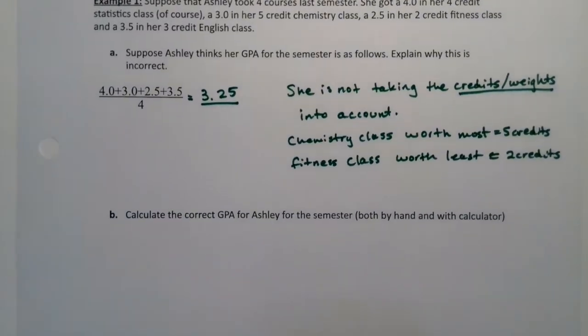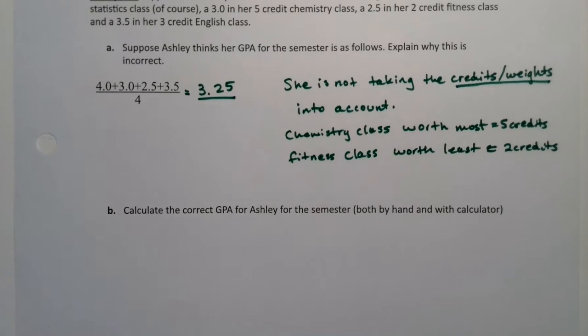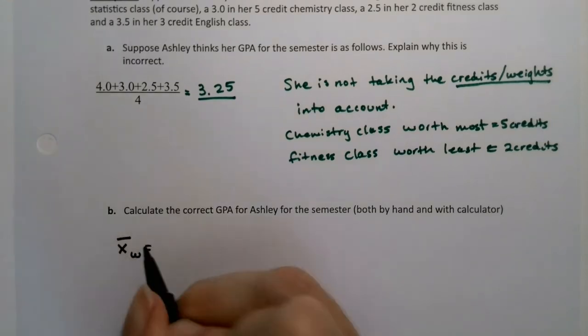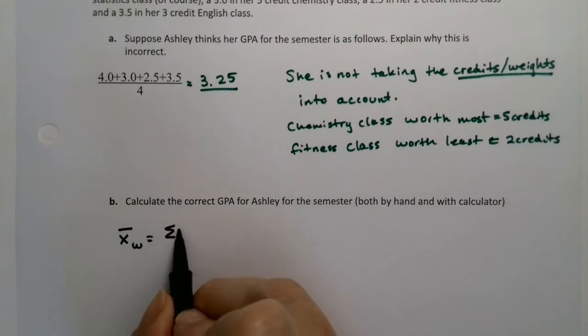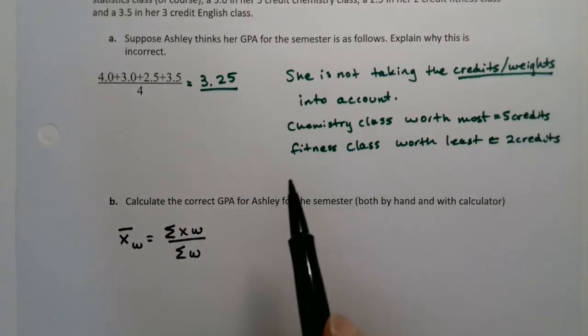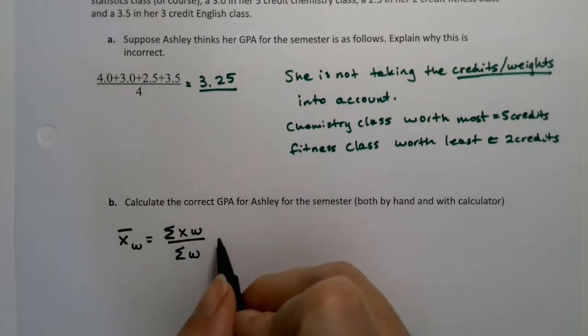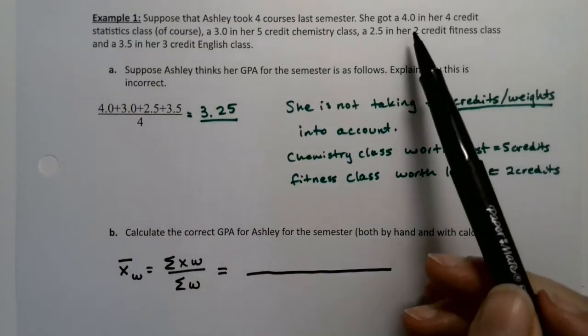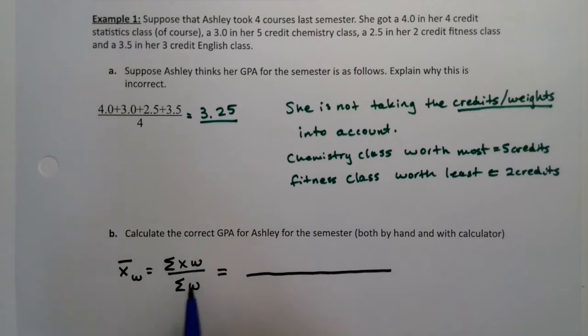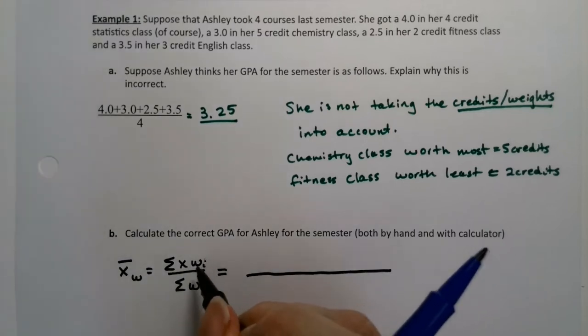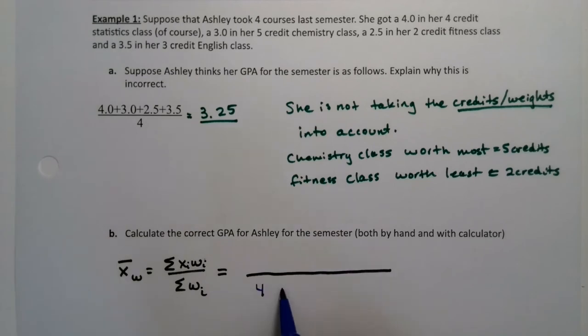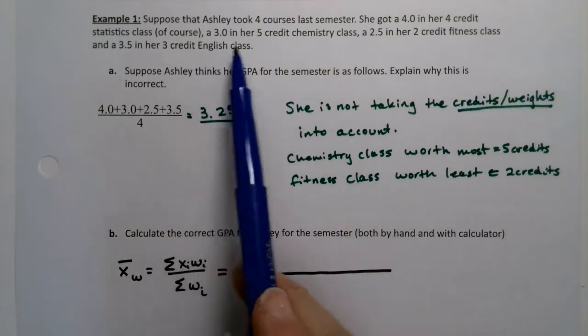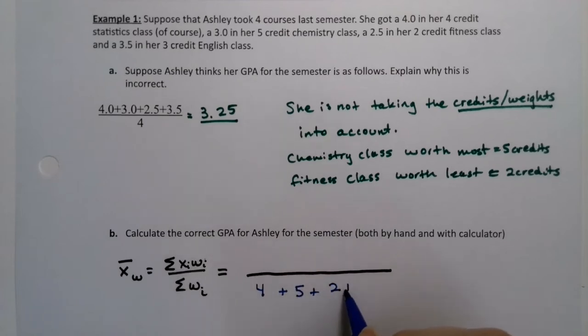Now let's do this by hand once so we can show how the formula works. This formula is a nice, easy formula to use. We do it pretty frequently just by hand. Don't worry about the little i's - they just mean index. Class number one, if we look at the paragraph, is her four credit statistics course. So weight number one, which is what the little i stands for, is four. Weight number two is five, weight number three is two, and weight number four is three. It's just class one, two, three, four. That's all the little i stands for.